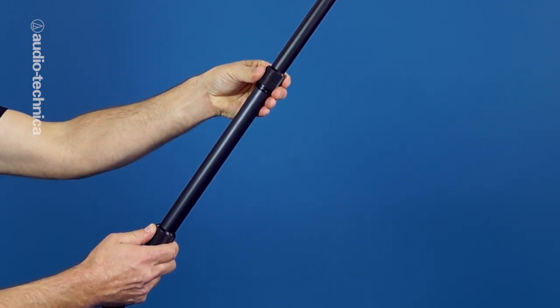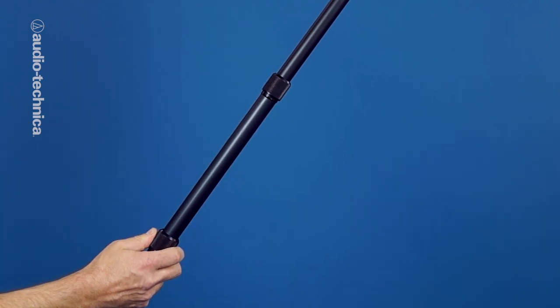Only tighten down the pole finger tight. Otherwise, it will take a lot of awkward straining to re-loosen when you need to adjust length.